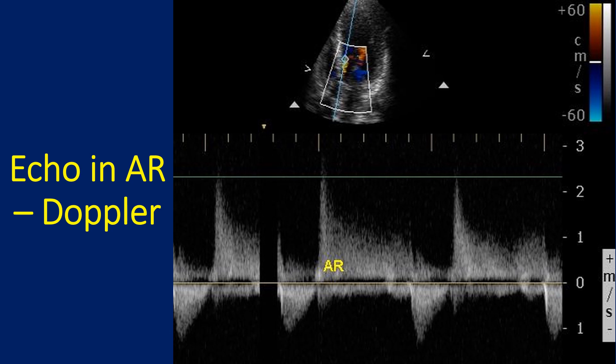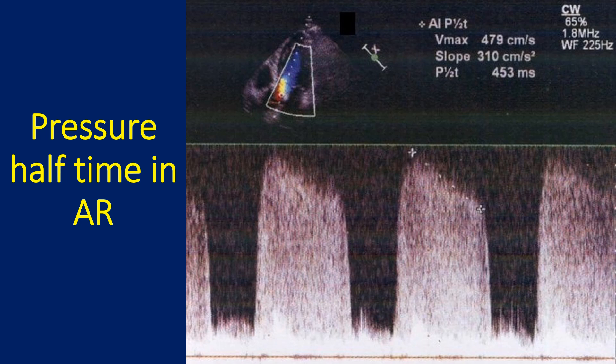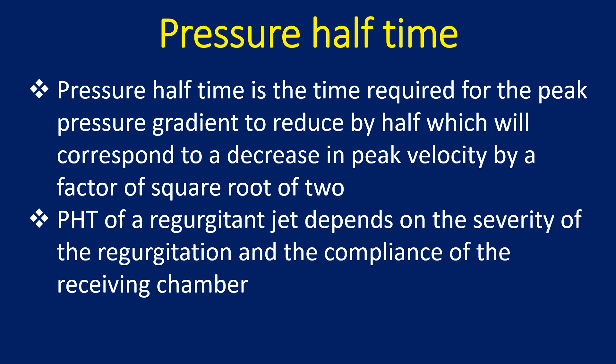This image demonstrates measurement of pressure half-time of the aortic regurgitation jet using continuous wave Doppler from the apical 5-chamber view. The Doppler cursor passes through the left ventricular outflow tract and aorta. The AR jet is seen as a positive tracing above the baseline, with a peak velocity of 4.7 m/s. The AR pressure half-time is shown as 453 ms, and the AR deceleration slope is 310 cm/s². Pressure half-time is the time required for the peak pressure gradient to reduce by half, corresponding to a decrease in peak velocity by a factor of the square root of 2.